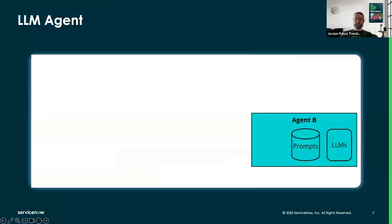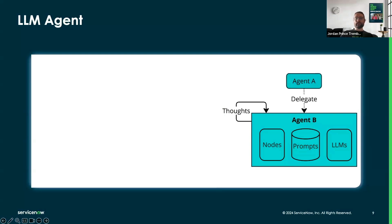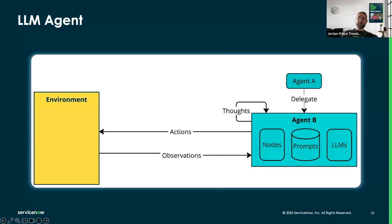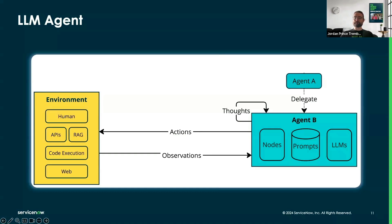Diving deeper, an agent contains prompt templates and uses LLMs. It contains nodes that enable sequences of steps for planning, reasoning, etc., and it can produce thoughts for itself. An agent can also delegate to another agent with a different expertise. Agents interact with the environment — they can take actions that read or modify the environment, and the environment responds back with observations. The environment can include many different tools like human interaction, APIs, RAG, code execution, and web browsing.